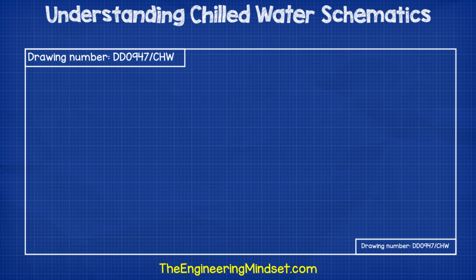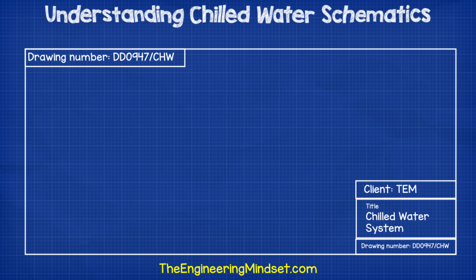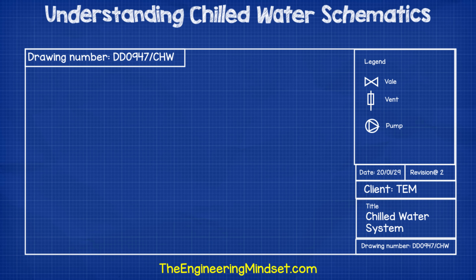How to read the drawing: in the top left and the lower right, you'll usually find the drawing number, which is a unique ID for that particular drawing. In the bottom right, you'll also find the title of the drawing, for example, chilled water system. You'll also find the date of production, the revision number, and other information such as the client and the organization that produced the drawing. And most importantly, on the right-hand side, you should find the legend, which lists all the symbols used as well as their title.